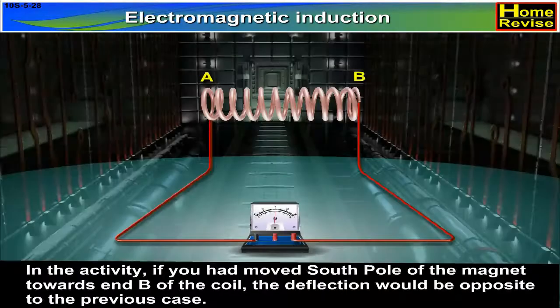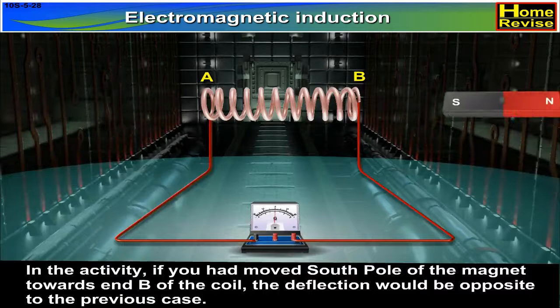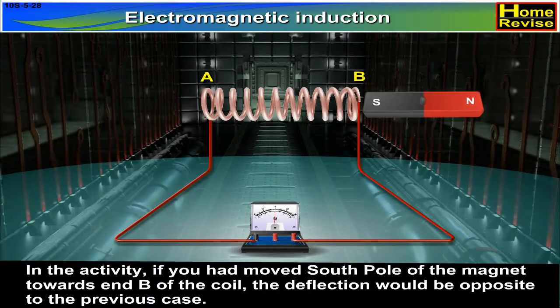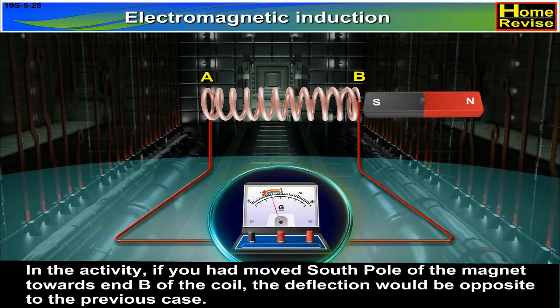In the activity, if you had moved the south pole of the magnet towards end B of the coil, the deflection would be opposite to the previous case.